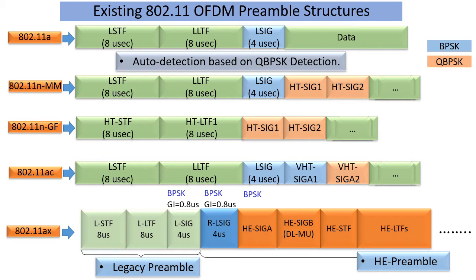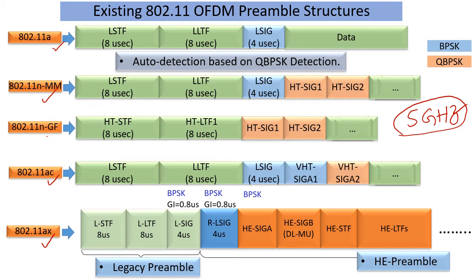Wi-Fi generations in 5 GHz, and also in 2.4 GHz, do not necessarily get new spectrum to operate on. For example, 802.11a, 11n, 11ac, and 11ax all operate in 5 GHz. It could be that you might have networks of all these types in the same area — devices connecting to one generation, while your neighbor might have 11ac parked on the same channel as your 11ax. So how do they coexist without becoming chaotic?